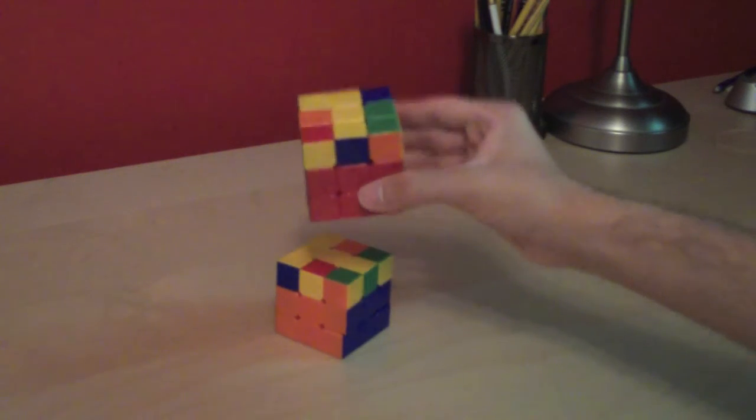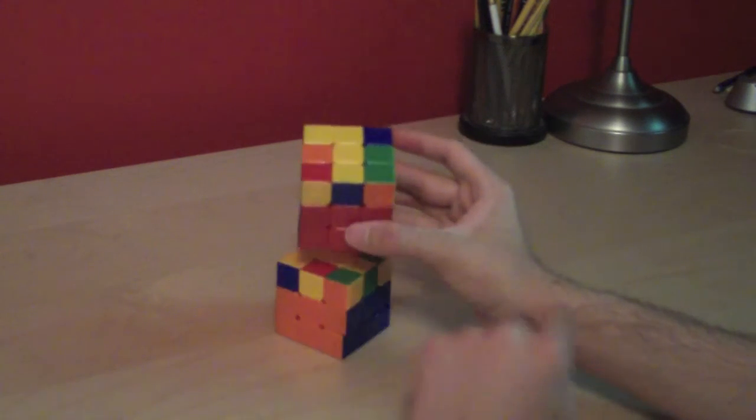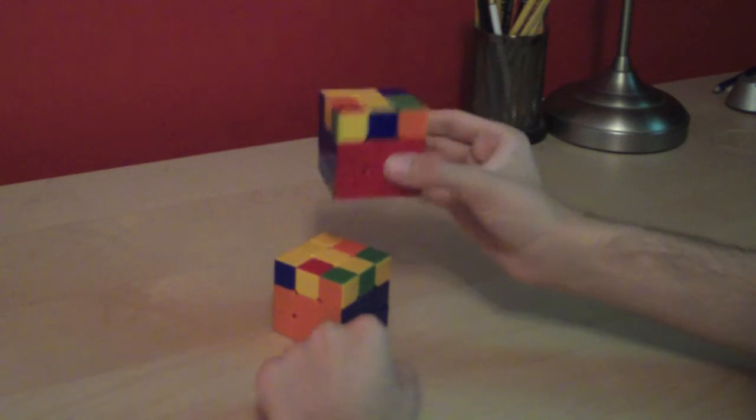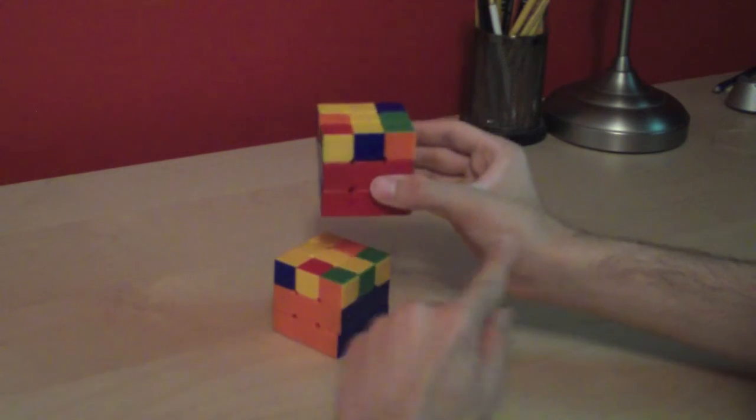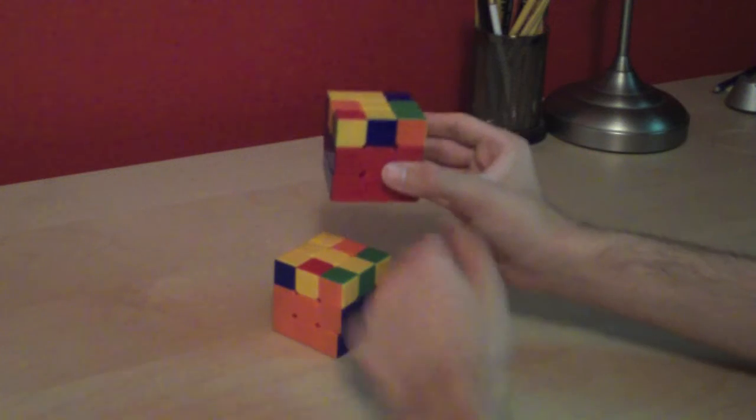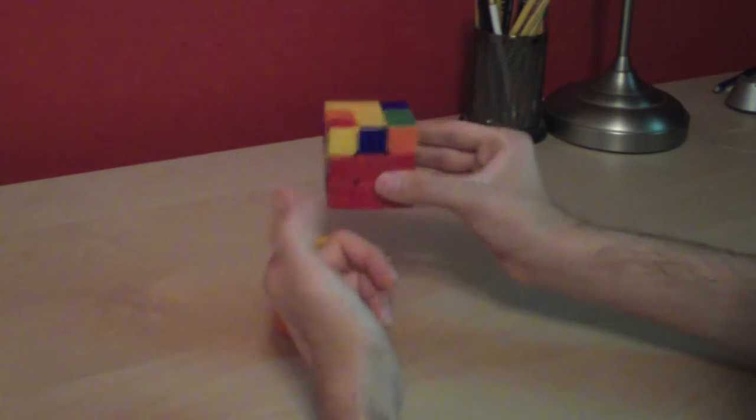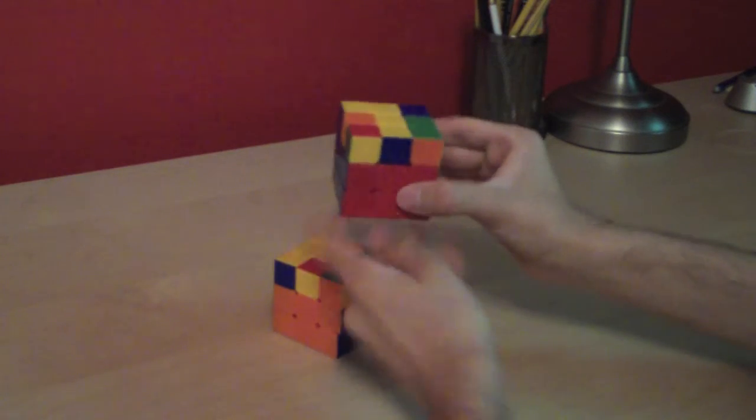Now we're going to use the same technique again to fix these two edges. And essentially, to fix these two edges, we're going to put one onto the front face, turn it up, replace it with the other one, then turn it the opposite way. And I'm just going to show you this, and hopefully, after practicing this a couple times, you'll be able to pick it up. So here's a bad edge. I'm going to do it to the left side. You could also do it to the right side. It doesn't matter. It's symmetric.